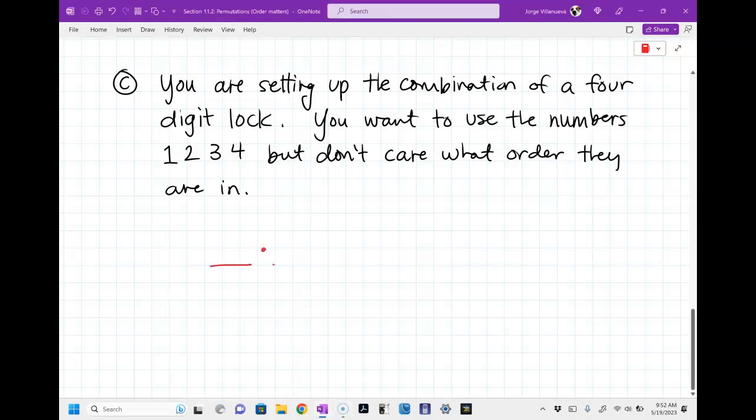So I'm going to set up, this is what we did yesterday for events. We're going to set up four events. The first number can be one, two, three, or four. So you have four options. Four options. Now, once you use one of those numbers, how many options do we have for our second digit? Three. And now you've used two different numbers. So how many options do we have for our third? Two. And then the last one is going to be one.